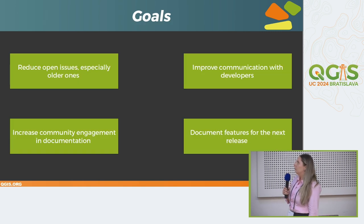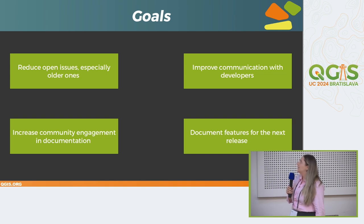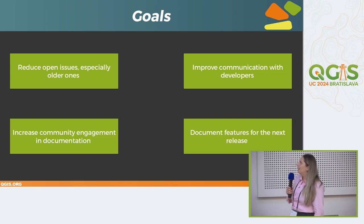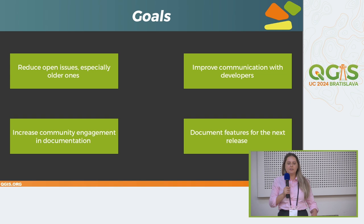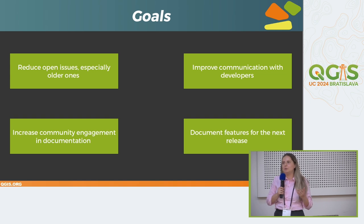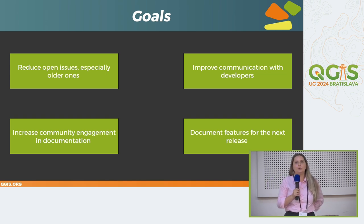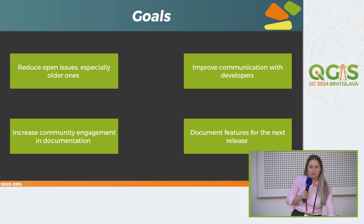This role also comes with some goals. The first is to reduce the number of open issues, especially older ones. We want to improve communications between writers and developers, and increase community engagement in the documentation — encouraging users to report issues, do some testing, and tell us what needs to be changed. We also try to document features for the next release. As you know, QGIS has four releases per year, so keeping up to date is one of the primary goals.